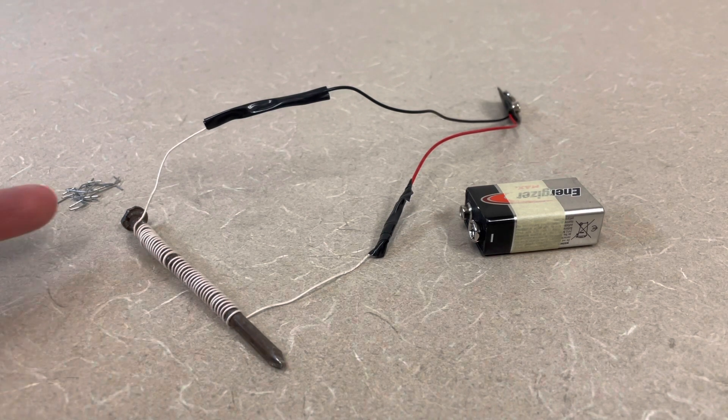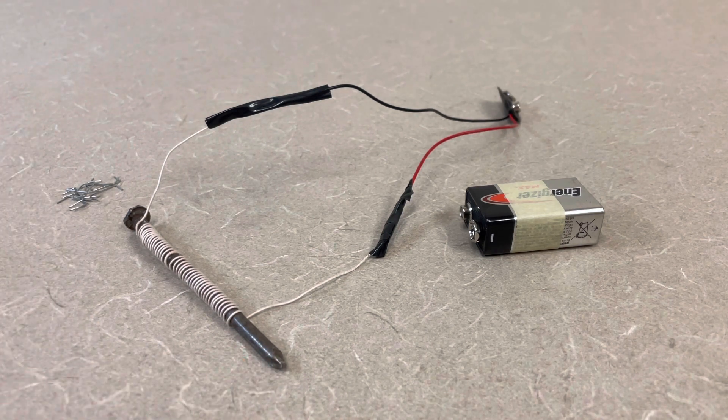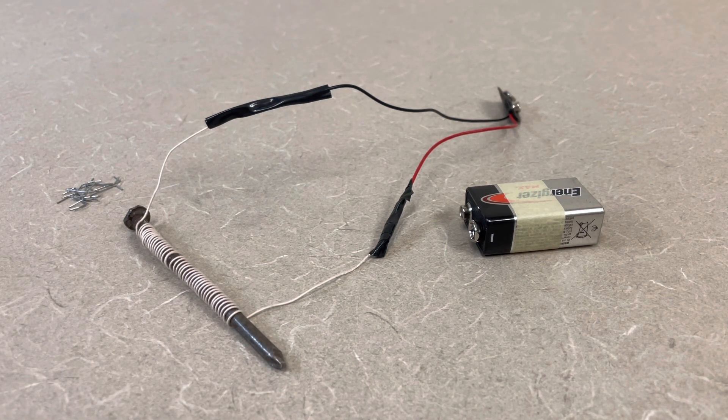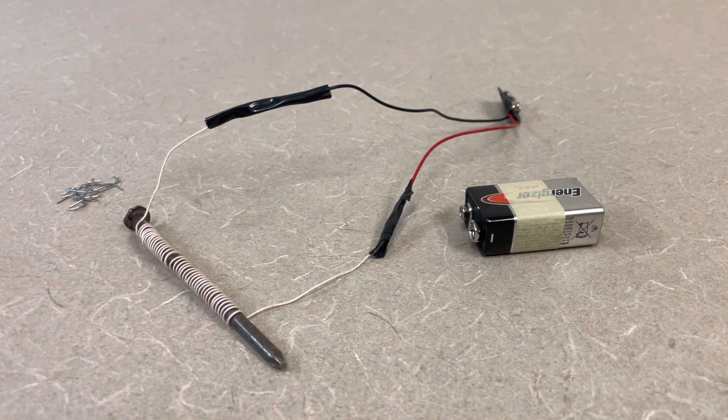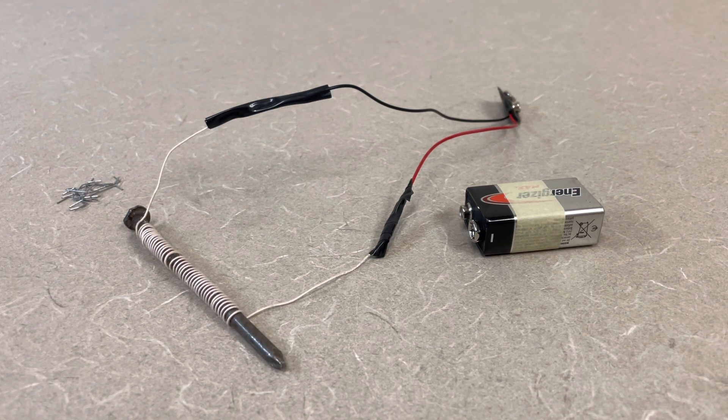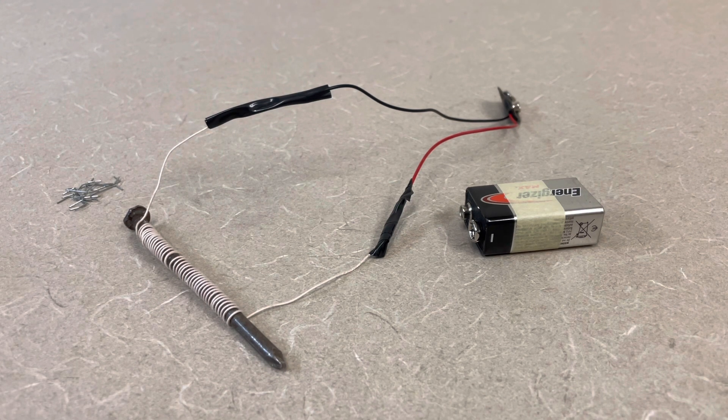And so you end up with one end of the nail that's like the south end of a magnet, the other end that's a north end of a magnet. And so what you should be able to do is when you connect this thing up, you should be able to touch the paper clips that are magnetic, that contain iron, and you should be able to lift them up. And so let's give this thing a go.